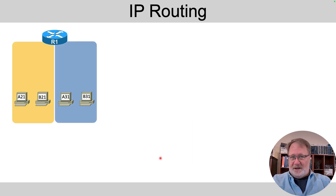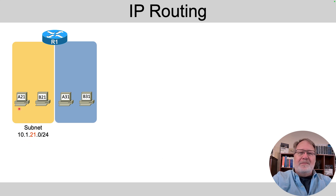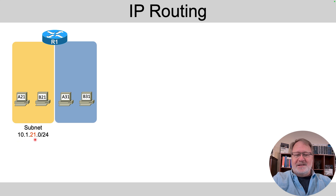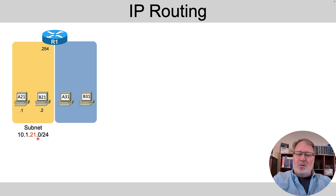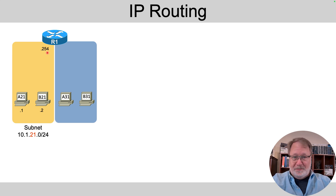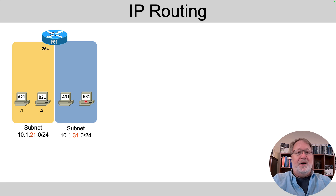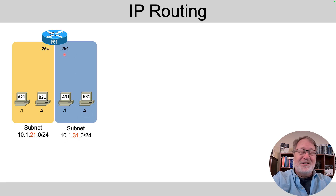Those four PCs are pre-configured with IP addresses. The PCs labeled A21 and B21 are in subnet 10.121.0 — A21 is 10.121.1, B21 is 10.121.2, and the router in that subnet is 10.121.254. Over in the second subnet, A31 and B31 have IP addresses 10.131.1, 10.131.2, and 10.131.254. You don't need to memorize that — I'm just letting you know what it is.